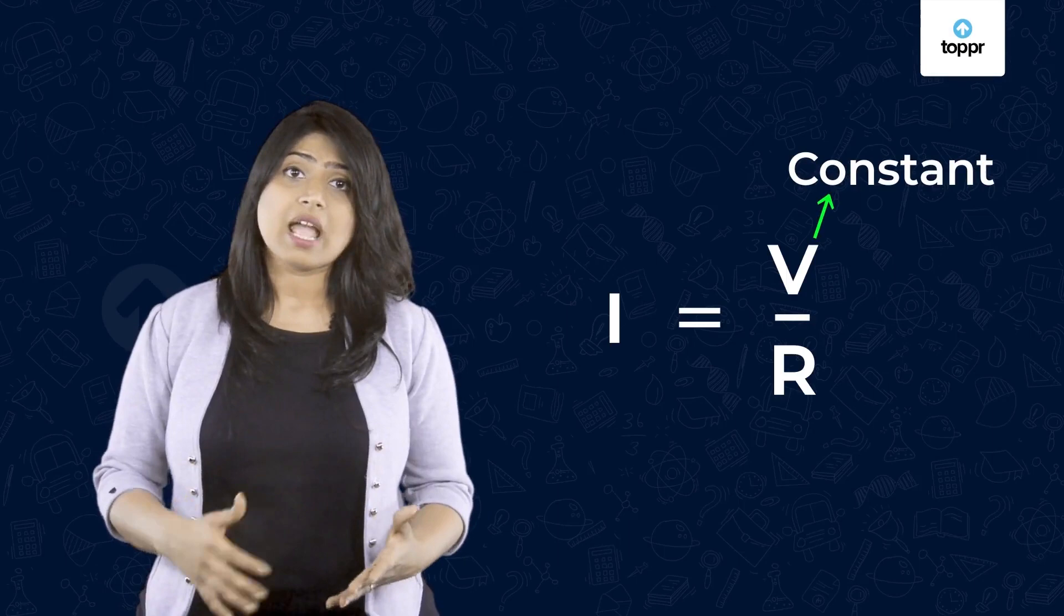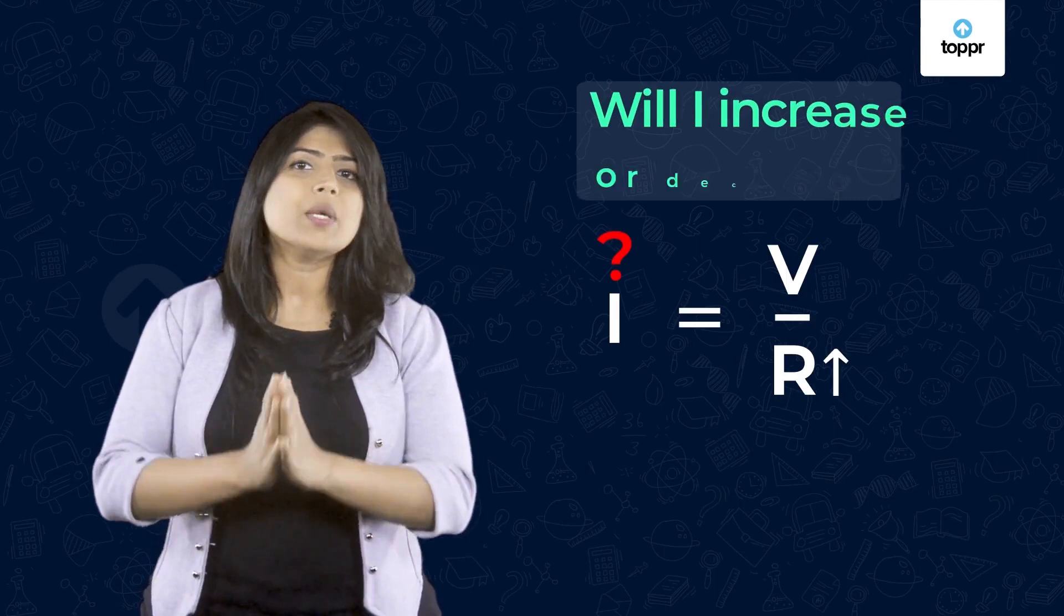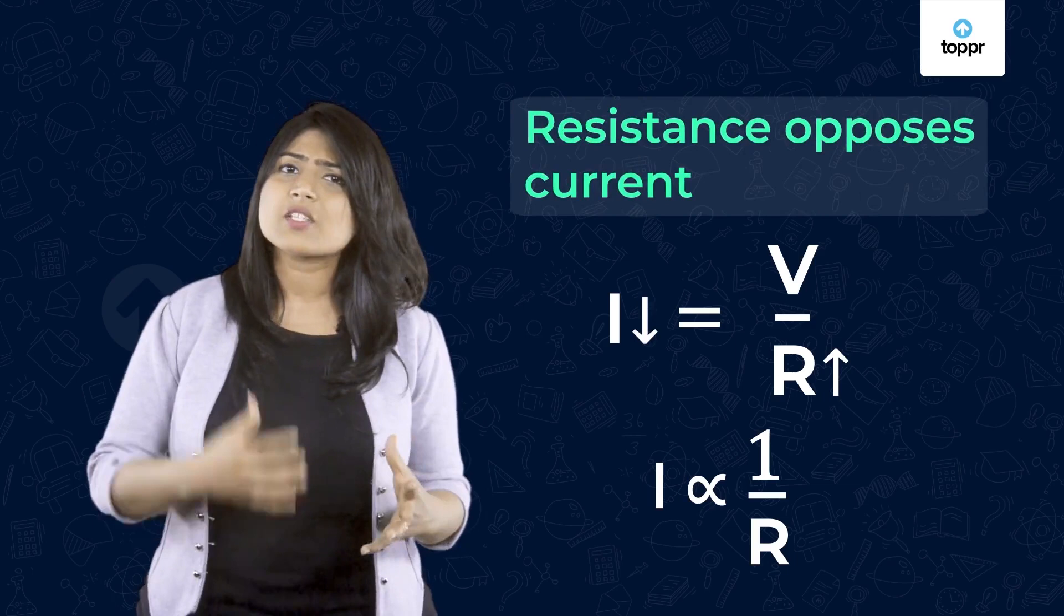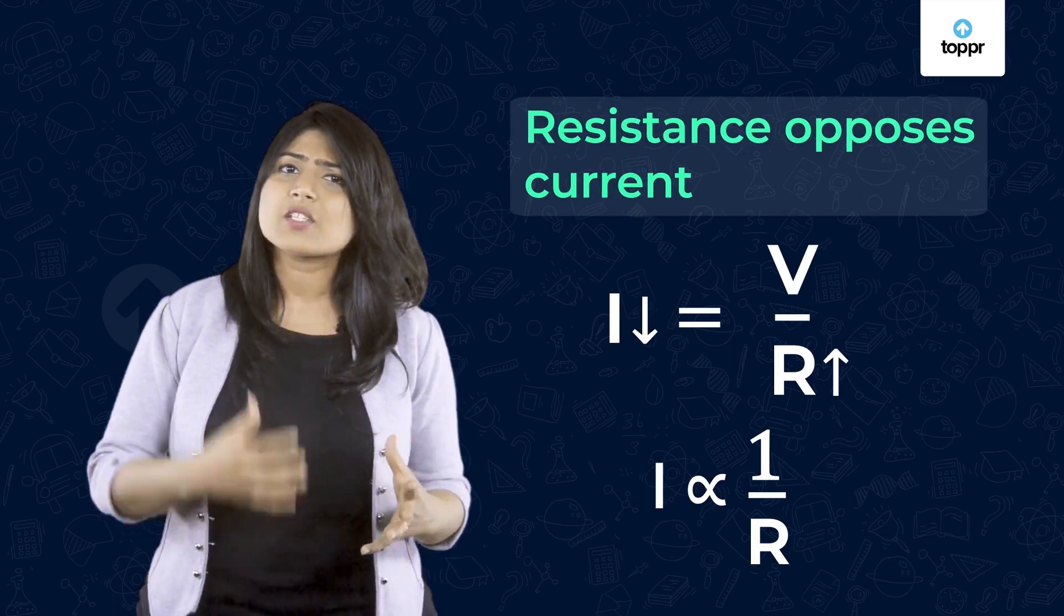If the input voltage is constant and we increase the resistance, what would happen to the current? Will it increase or decrease? Yes, there is an inverse relation between I and R. That is, if R increases, I will decrease. So, it seems like the resistance opposes the current flow.